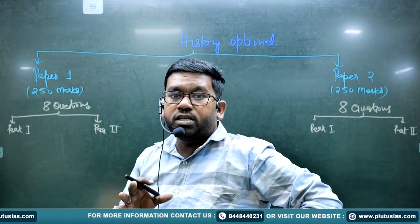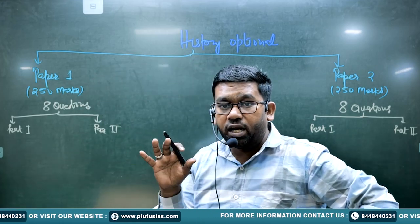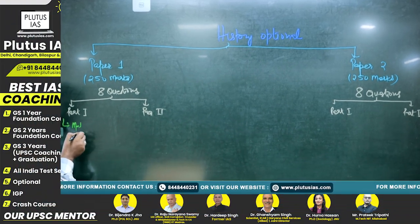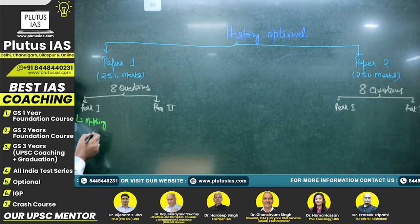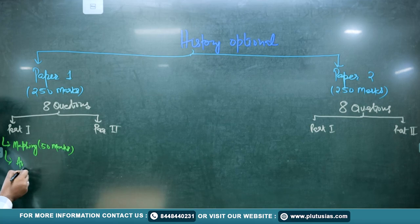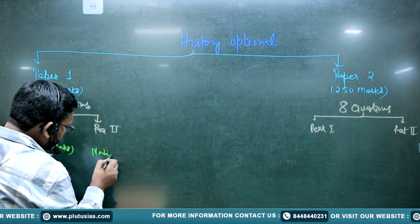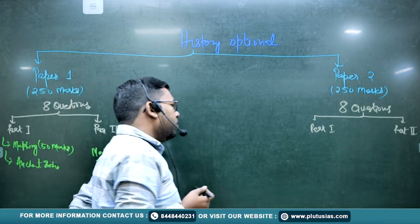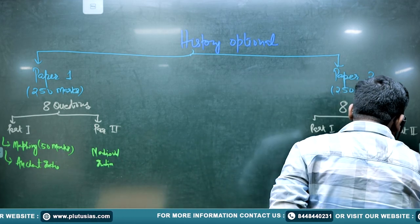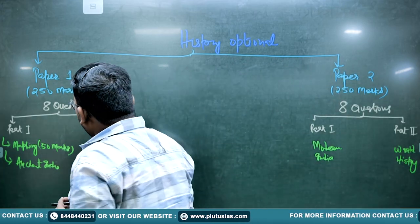History covers ancient India, medieval India, modern India, post-independent India, and world history. Art and culture is integrated throughout all papers and is not separate. In Paper 1, Part 1, there are mapping questions of 50 marks, mostly from ancient India. Part 2 covers mostly medieval India. In Paper 2, Part 1 covers mostly modern India and post-independent India, and Part 2 covers mostly world history.